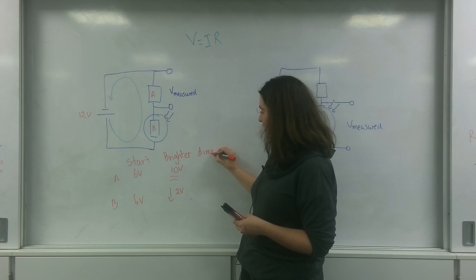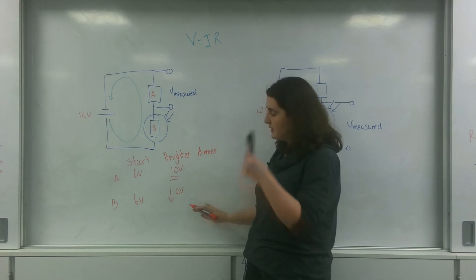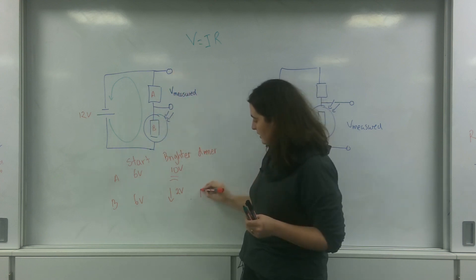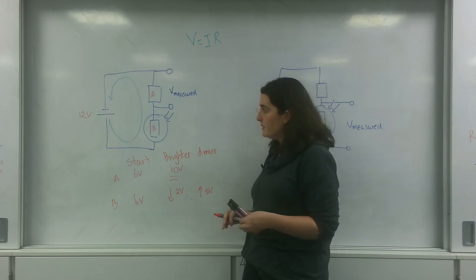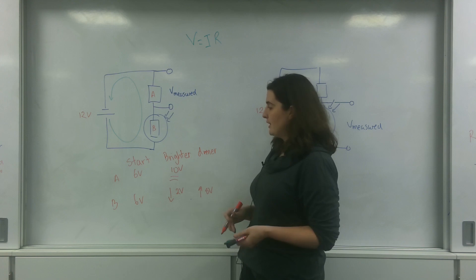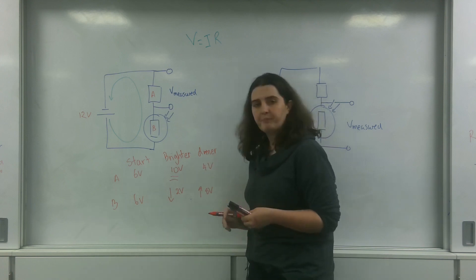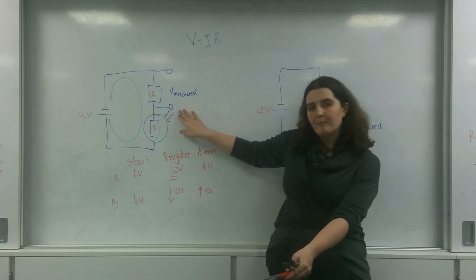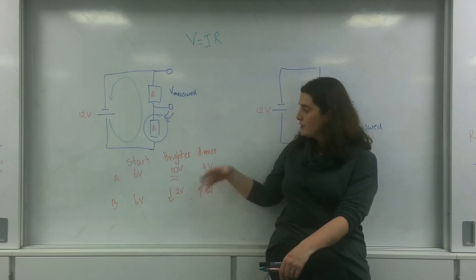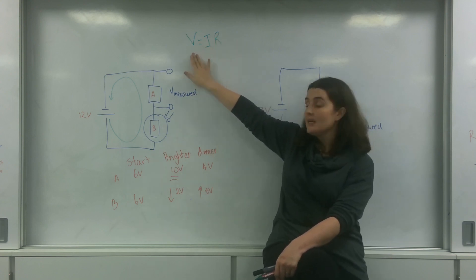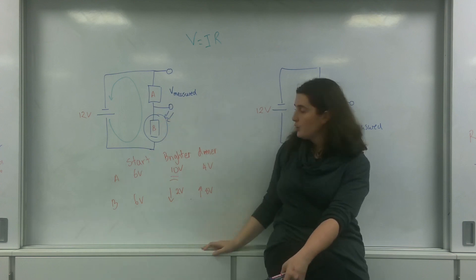Now let's have it going dimmer. The potential across the LDR would increase — let's say it increases to eight volts — which means the potential across the other resistor would decrease to only four volts. So this LDR, depending on brightness, has its resistance affected, which affects its potential, and that in turn changes the potential across the other resistor.